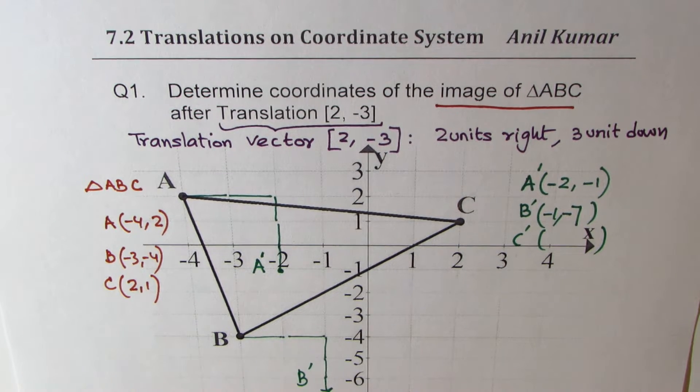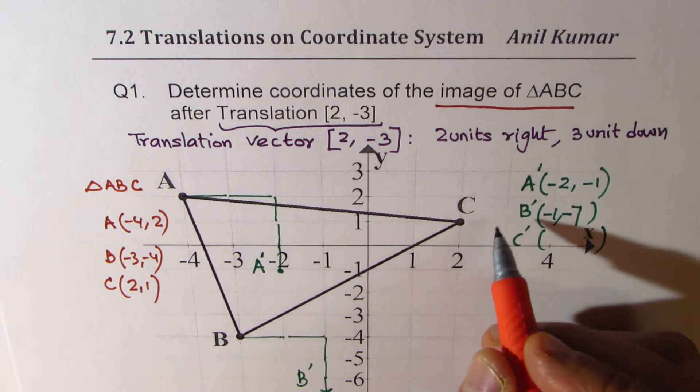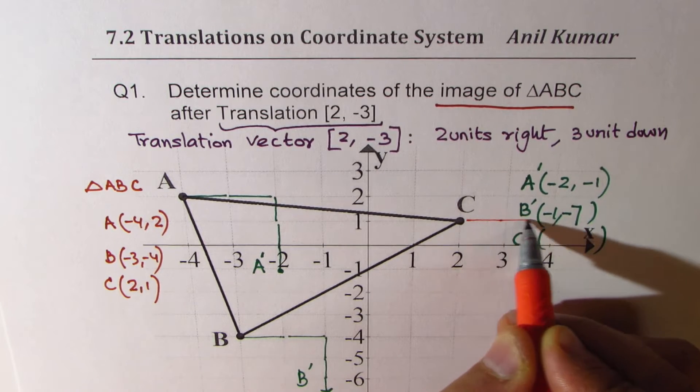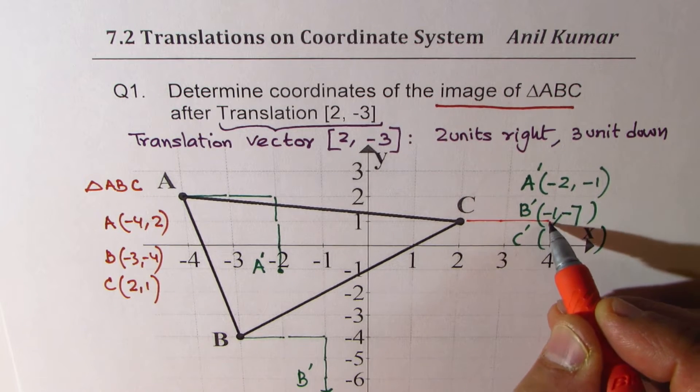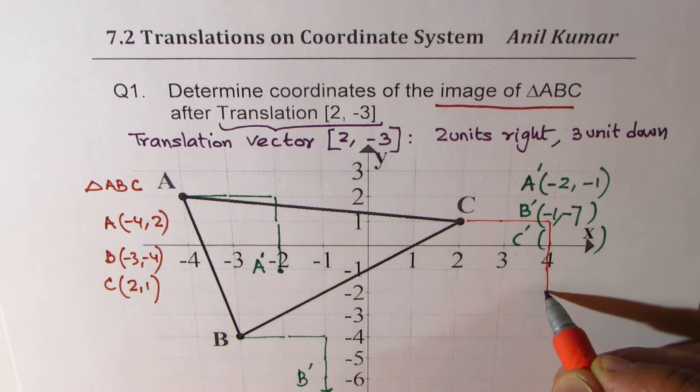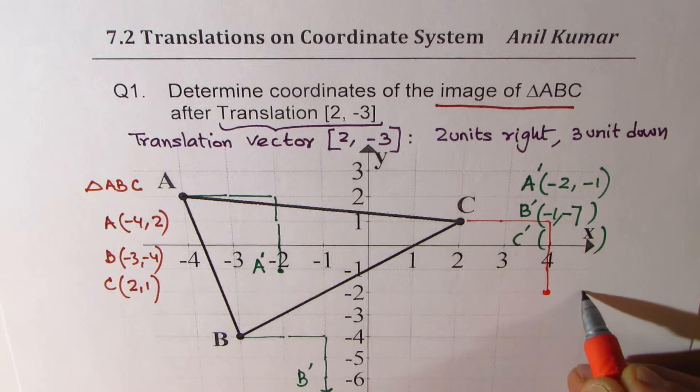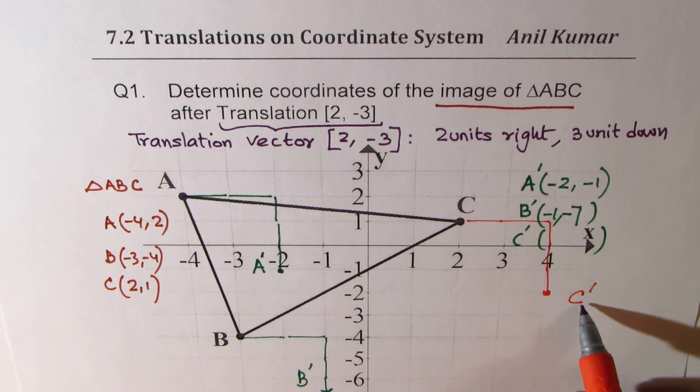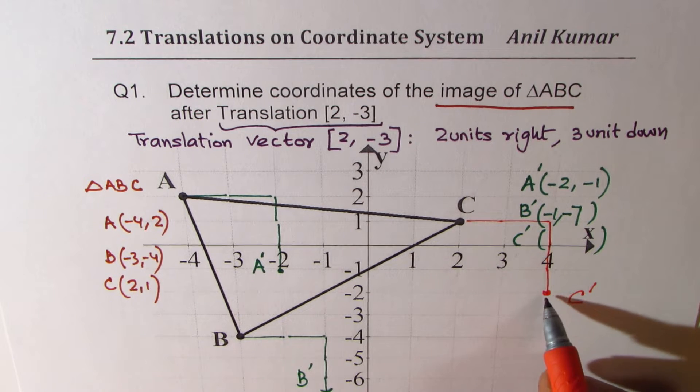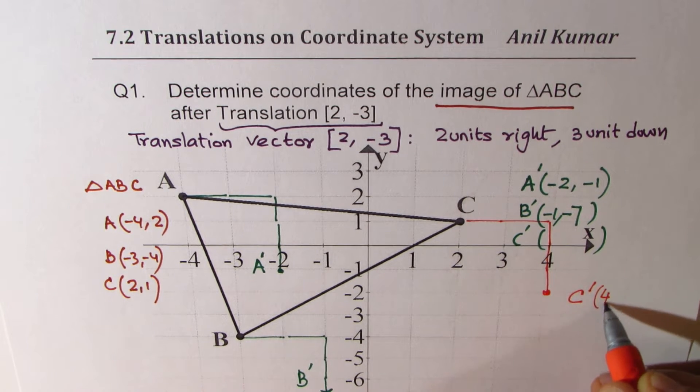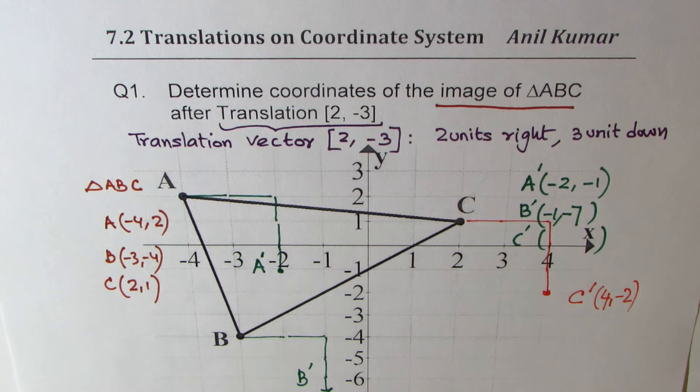Now let's look into C. Let's change the color of the ink. So if I move two right, I go to these two places and three down one, two and three. So we reach this place. So that is C'. The coordinates for C' will be (4, -2). So we get (4, -2) as the image for C. So I kind of made a rough sketch, but it helps you to understand, get the overall picture.